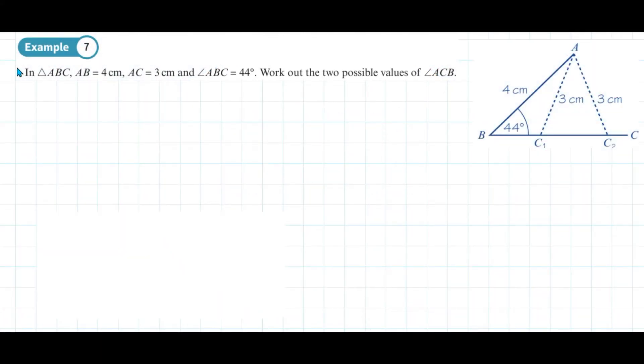This is example 7 from page 184 of the year one textbook. In triangle ABC, AB is 4 centimeters, AC is 3 centimeters, and angle ABC is 44 degrees. The question asks to work out the two possible values of angle ACB, which becomes more obvious when we draw this as a triangle.